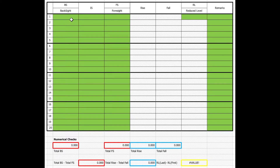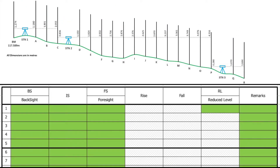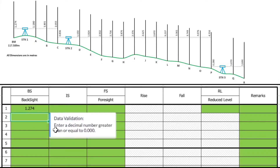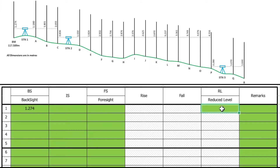We're going to fill in values for backside, intermediate side, and foresight. As we go through our example, we're also going to enter in our reduced level and remarks, so we know which of the reduced levels relate to each of the points. With our level at station one, our first reading is a backside, taking a value of 1.274. For this row, we also enter the reduced level of 117.589 and, under the remarks column, note this is our benchmark.